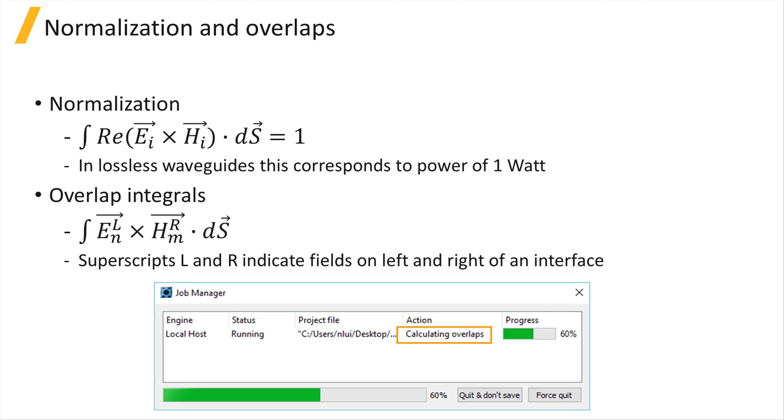During the finding mode step of the simulation, in addition to calculating the modes in each cell, the amplitude of the modal fields are also normalized so that the real part of E cross H integrated over the mode is 1. For lossless waveguides, this means that the mode will carry 1 watt of power.